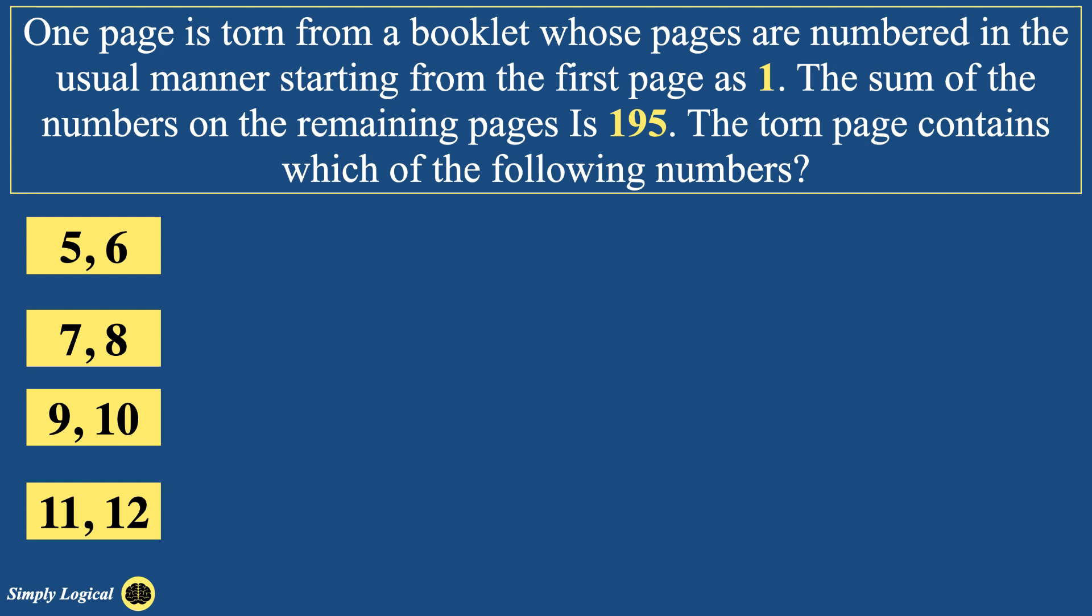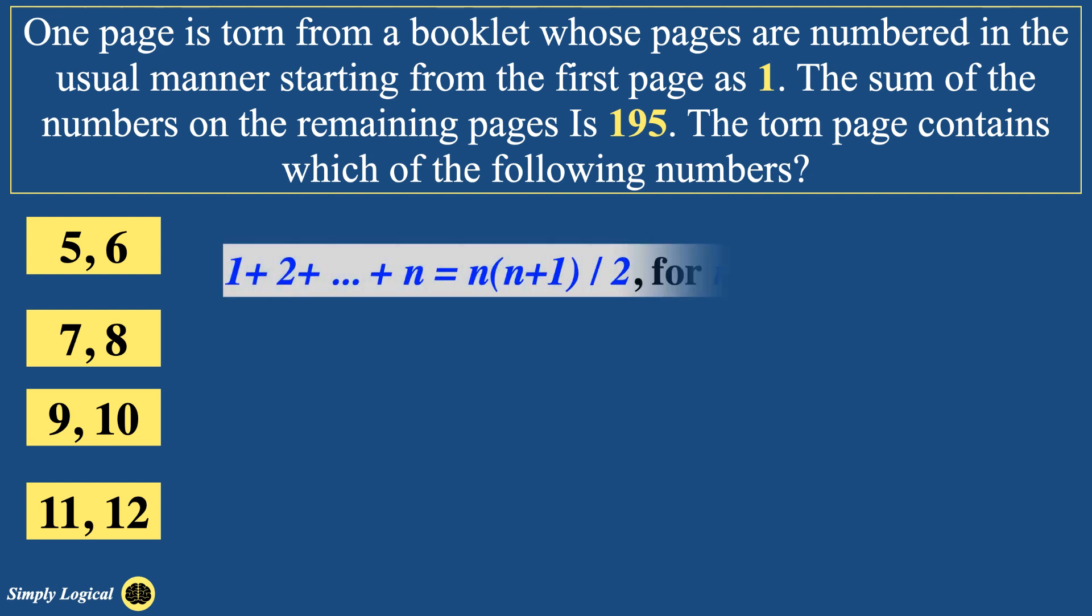The formula is important here because the pages in the book are marked in the form of natural numbers, that is 1, 2, 3, 4, etc. We know that the sum of all the numbers from 1 to n can be calculated by using the formula n into n plus 1 divided by 2, where n is the last number in the series. Remember, this formula is applicable for only positive natural numbers.